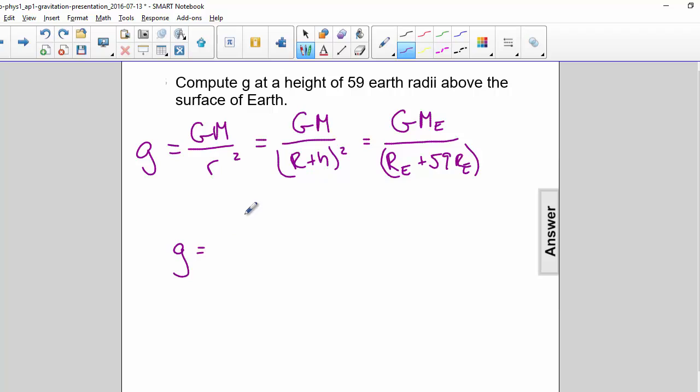So we get g equals GmE divided by 60 Re squared. So that is 1 over 3600 times GmE over Re squared.